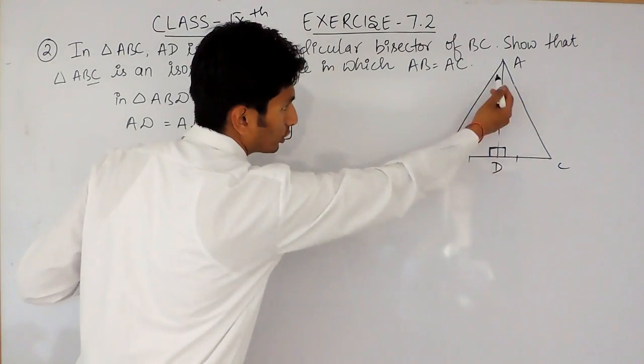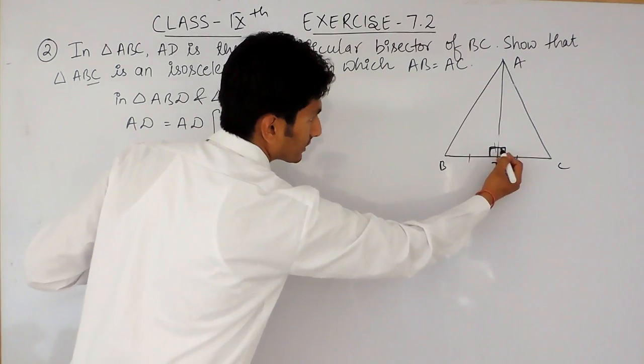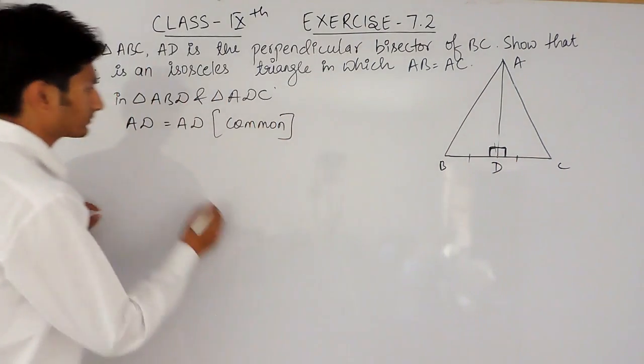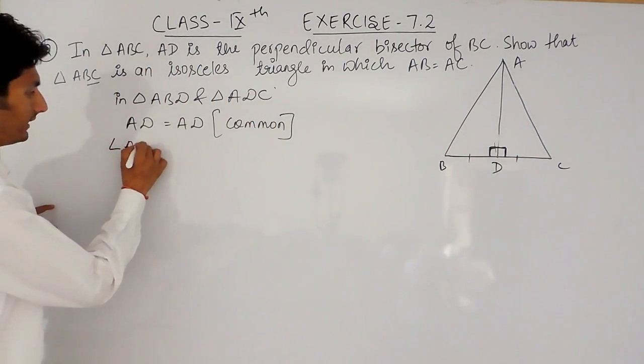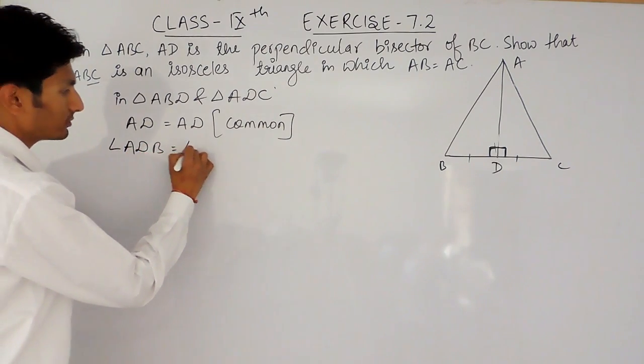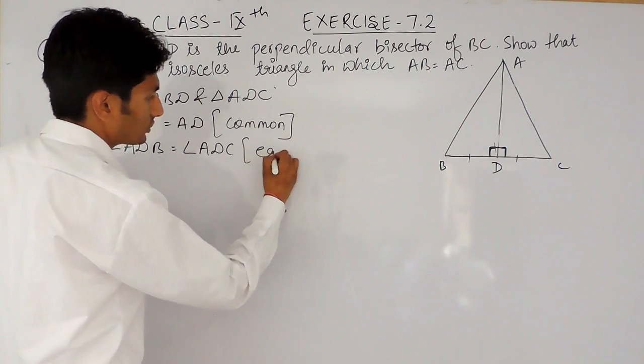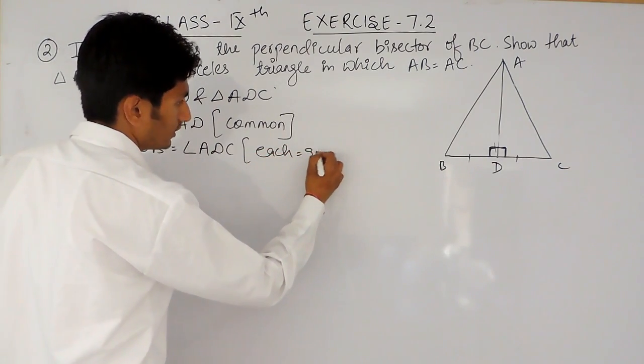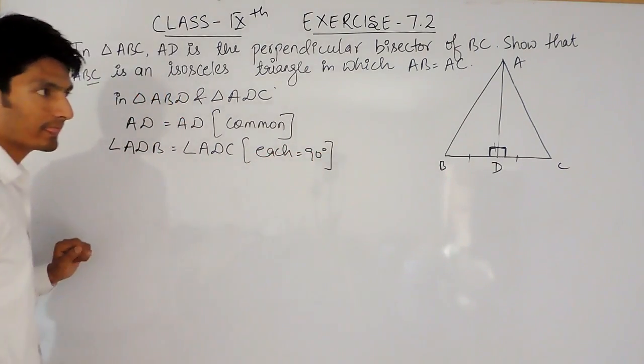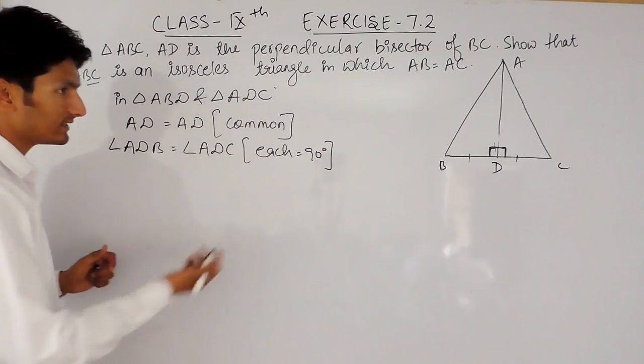So this must be equal for both. And this angle must be equal to this angle. That is, angle ADB must be equal to angle ADC. Each is equal to 90 degrees. I have already discussed why these two angles are of 90 degrees.